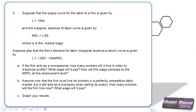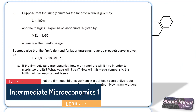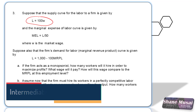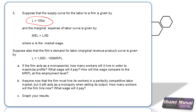Hi everyone. We're here at question 3 in tutorial sheet 4. This question says: suppose that the supply curve for labor to a firm is given by this equation, and the marginal expense of labor curve is given by this equation, where W is the market wage. Suppose also that the firm's demand for labor, the marginal revenue product curve, is given by this equation.